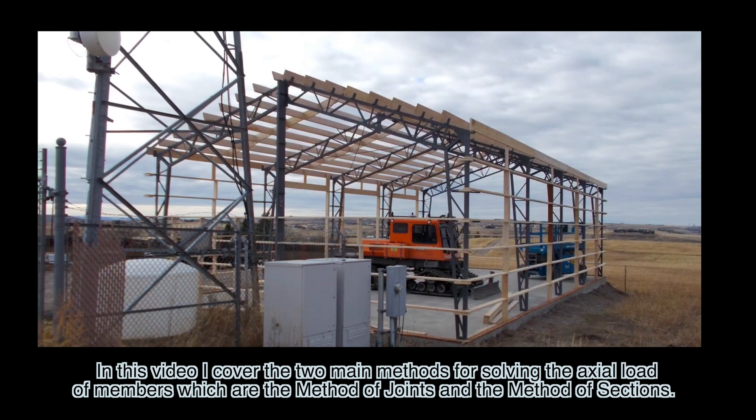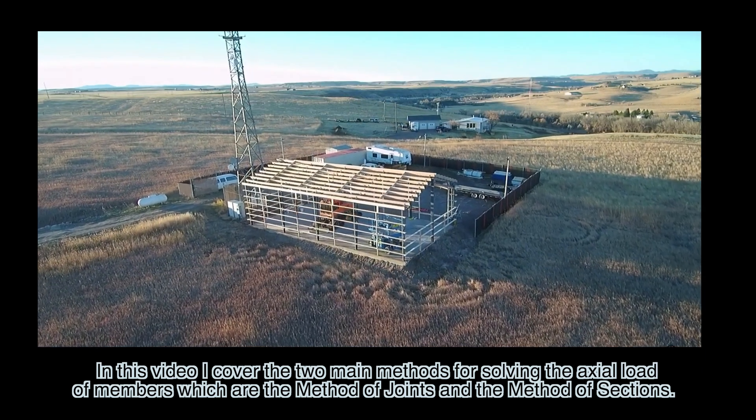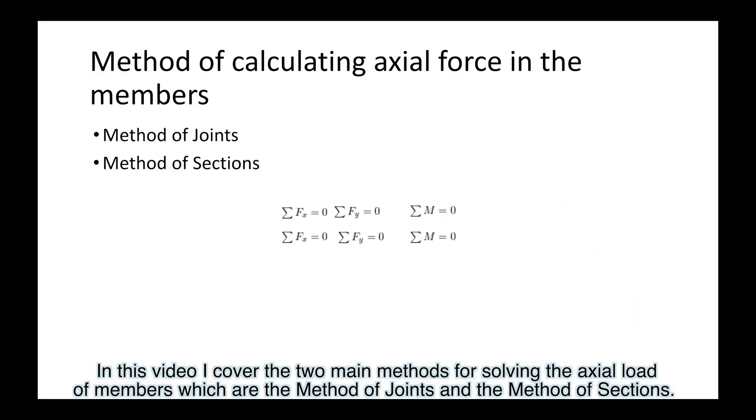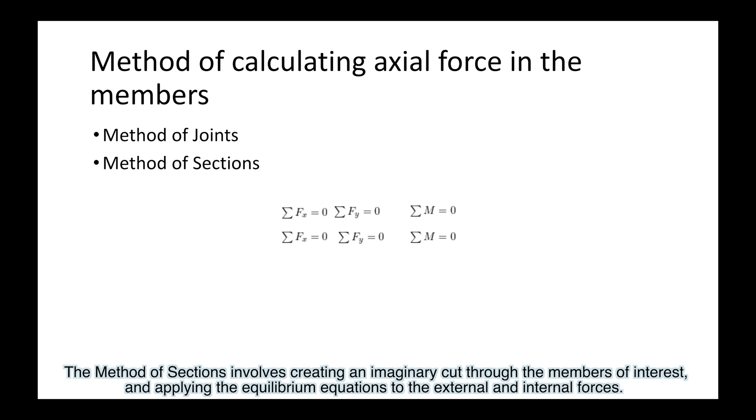In this video, I cover the two main methods for solving the axial load of members, which are the method of joints and the method of sections. The method of joints involves applying the equilibrium equations to solve the internal forces acting on every joint within the truss. The method of sections involves creating an imaginary cut through the members of interest and applying the equilibrium equations to the external and internal forces.